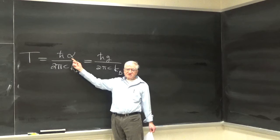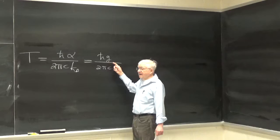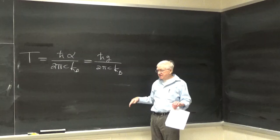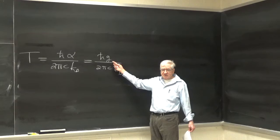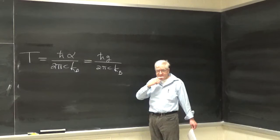So for uniform acceleration alpha, the temperature is that formula, and if effectively by the equivalence principle in a static gravitational field with a local acceleration g — which is here 9.8 meters per second squared — there's an equivalent temperature. And of course that temperature for 9.8 is pretty damn small.